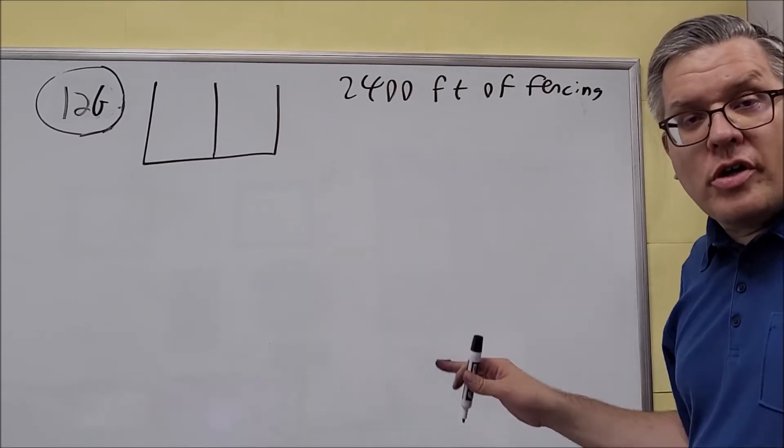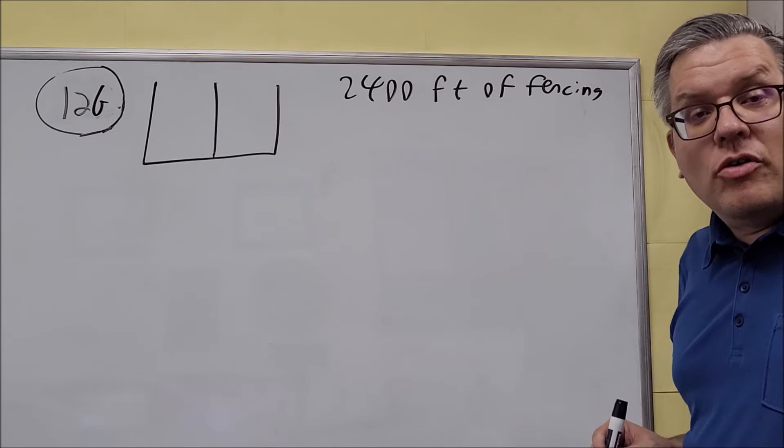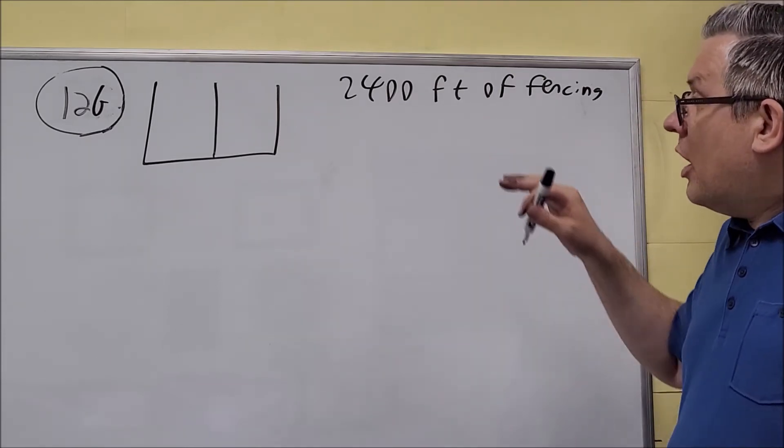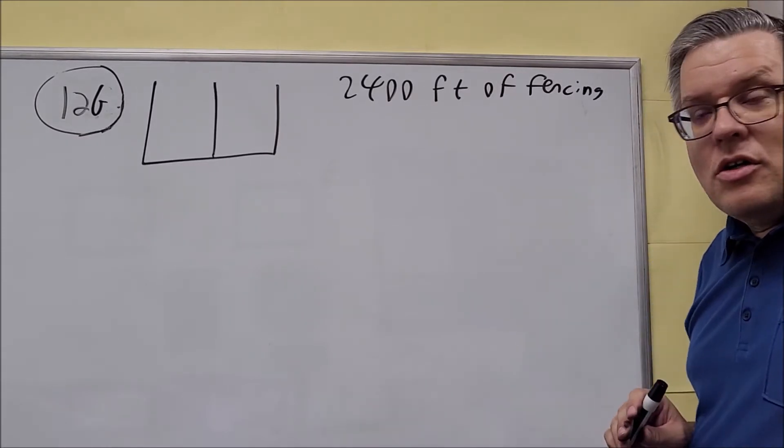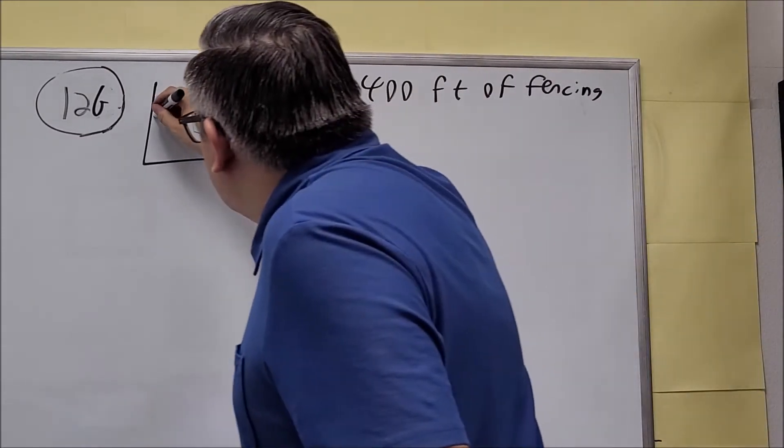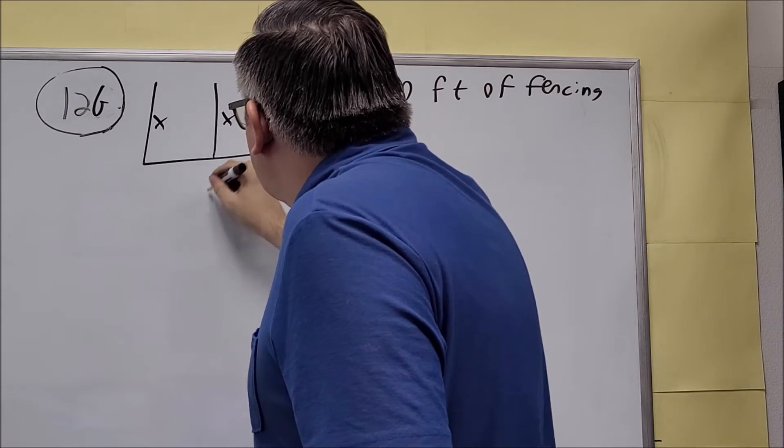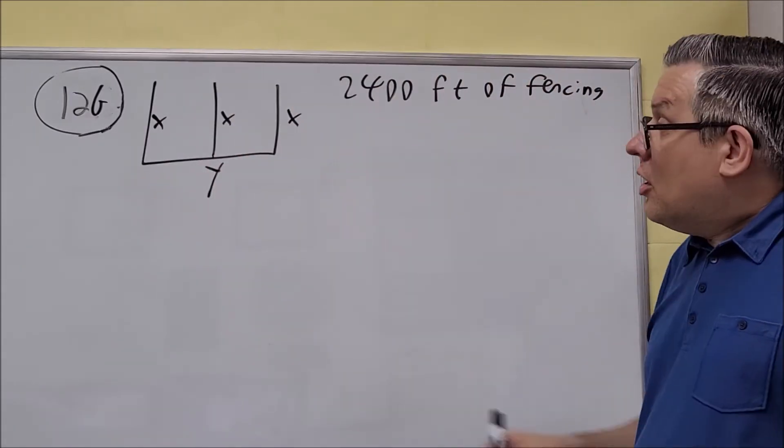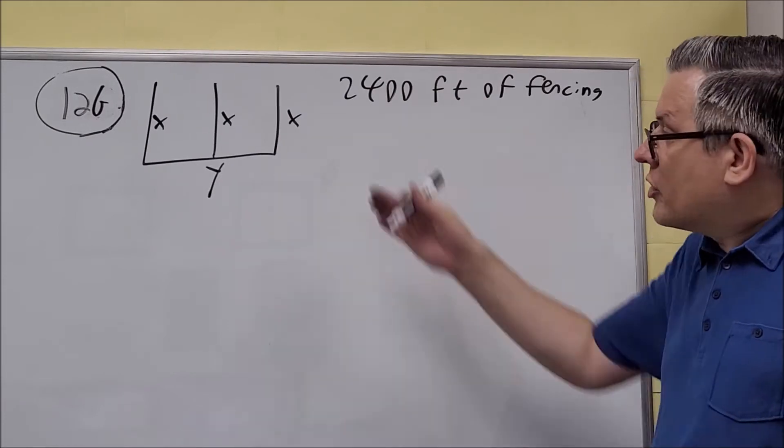We want to find a formula, take the derivative, and set it equal to zero to get the answer. First, we have to figure out what the x's and y's are for each of those. Let's call the short ones x and the longer one y. It doesn't really matter which variables you use.